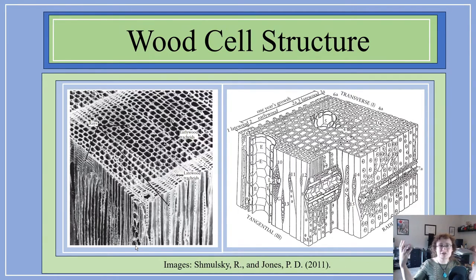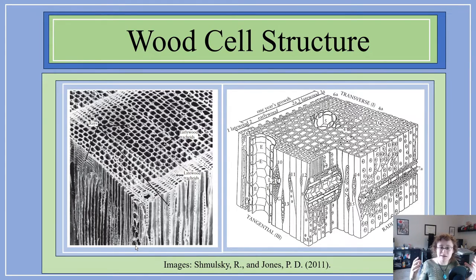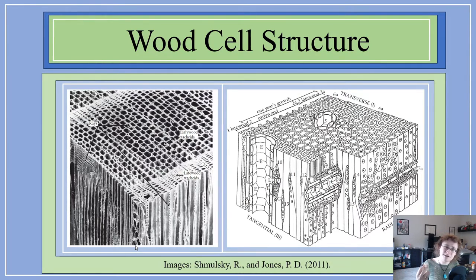Why would nature select for such a seemingly ridiculous solution? Why not just make a tree trunk from a large pile of nice cubes or ovoids? Ultimately, like all things in evolution, this is a case where form follows function. To understand why wood cells are shaped like this — even though from the standpoint of a living cell's machinery this must be an absolute nightmare — it does make sense when you consider the function of a tree. Let's consider the two functions we previously discussed: structural support and moisture transport.